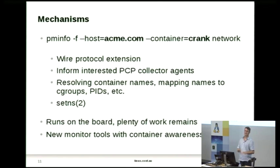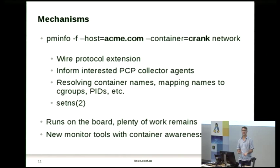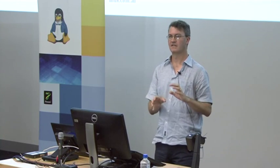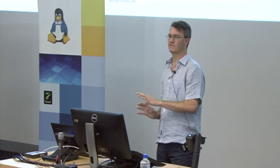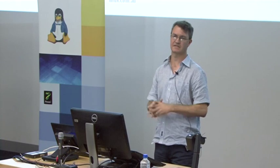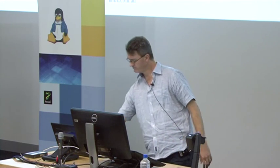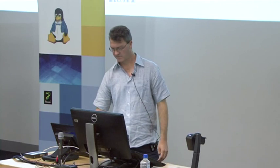The next PCP release will include this code within the next couple of weeks - the first release to have any of these concepts. There's a lot of work still going on to improve and refine this. Going forward we'll be writing new monitor tools specific to containers that know about cgroups and can report container activity - analogous to vmstat, iostat, and top but container-specific. The kernel metrics available for cgroups are not the same as those for the raw host, so you can't just run vmstat on a container and expect useful results - whole new tools will need to be written.